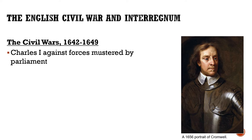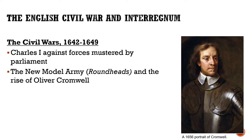Parliament's army was somewhat unique — called the New Model Army, it was made up predominantly of Puritans, a minority Protestant faith in England. They wore plain clothing and cut their hair in a distinctive bowl-cut style, earning them the nickname 'Roundheads.' The New Model Army was led by a noble named Oliver Cromwell, who prior to the Civil War came from a middling noble family and was not particularly well known or important.